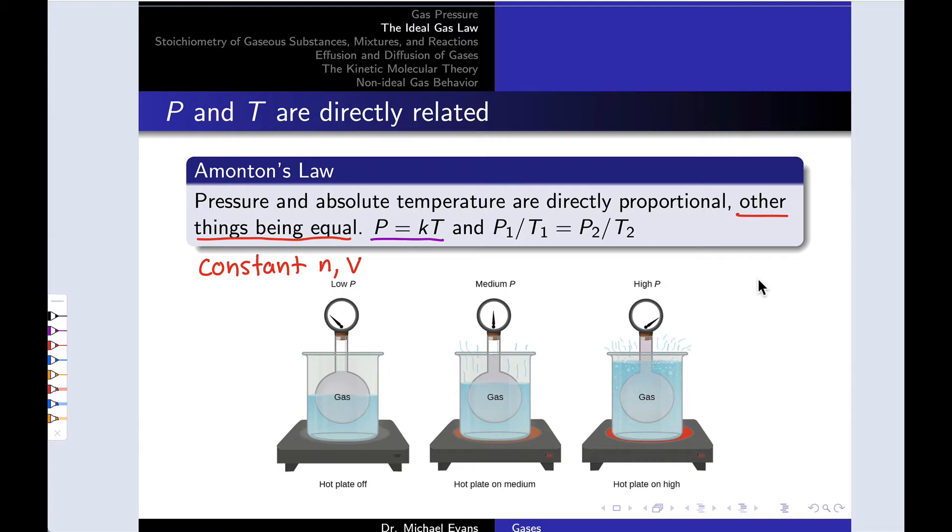Another way to write this equation is to appreciate the fact that P divided by T must be a constant, regardless of the pressure and temperature. So we can write this in a multi-state form as P1 divided by T1 must equal P2 divided by T2. In words, the pressure divided by the temperature must be a constant. This only works if we think about the temperature in units of Kelvin. That is key. This is called Amonton's Law, an important empirical gas law for pressure and temperature.